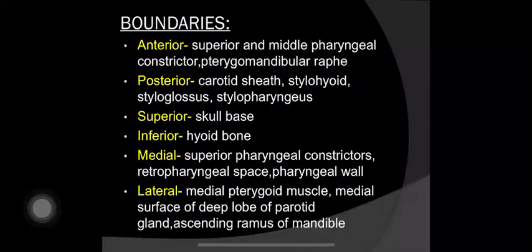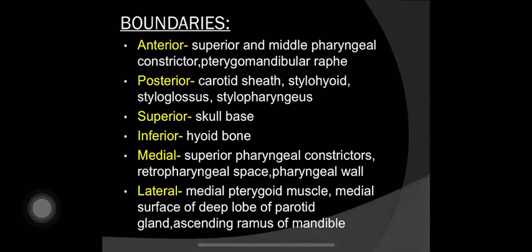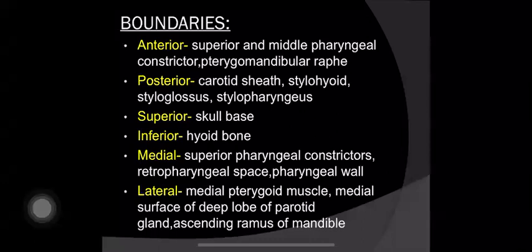Boundaries: Anteriorly, there is the superior and middle pharyngeal constrictor and pterygomandibular raphe. Posteriorly, there is the carotid sheath, stylohyoid, styloglossus, and stylopharyngeus. Superiorly, there is the skull base. Inferiorly, there is the hyoid bone. Medially, there is the superior pharyngeal constrictors, retropharyngeal space, and pharyngeal wall. Laterally, there is the medial pterygoid muscle, medial surface of the deep lobe of the parotid gland, and ascending ramus of mandible.